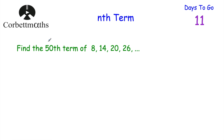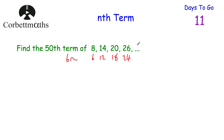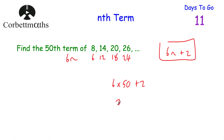Sometimes we might be asked to use the nth term to find the 50th or 100th term. We've got the sequence 8, 14, 20, 26, and I want to find the 50th term. The sequence goes up by 6, so the multiples are 6, 12, 18, 24 — that's 6n. To get from 6 to 8 we add 2, so the nth term is 6n plus 2. To find the 50th term, we do 6 times 50 plus 2: 300 plus 2 equals 302. And if you got that, well done.